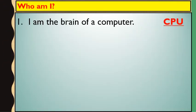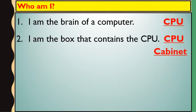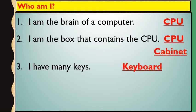Now some extra exercises. Guess who am I? First one: I am the brain of a computer. Children, who am I? I am a CPU. Second: I am a box that contains CPU. Children, who am I? I am a CPU cabinet or CPU box. Third: I have many keys. Children, guess who am I? I am a keyboard.